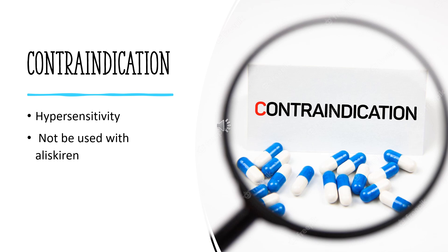Contraindication. Azulsartan must not be used with aliskiren, a renin inhibitor, in patients with diabetes, as this increases the risk of serious adverse effects. Like other antihypertensive drugs acting on the renin-angiotensin system, it is contraindicated during the second and third trimesters of pregnancy. It should not be used during pregnancy.